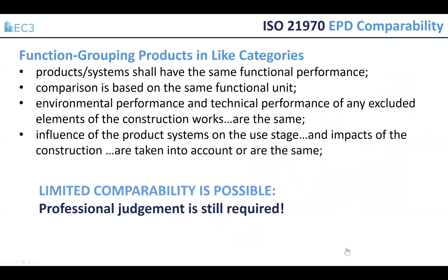At the beta release, we've done our first pass at lumping together performance aspects of products. However, when evaluating the products in a category, there are still products that have slightly different performance aspects, and so professional judgment is required. Additional guidance for each material category is being developed.